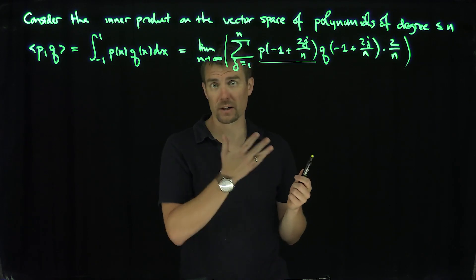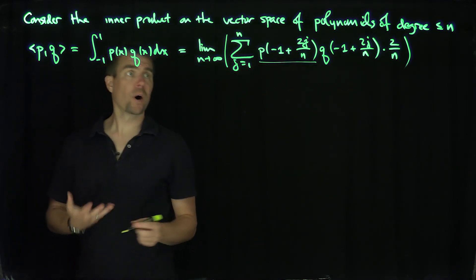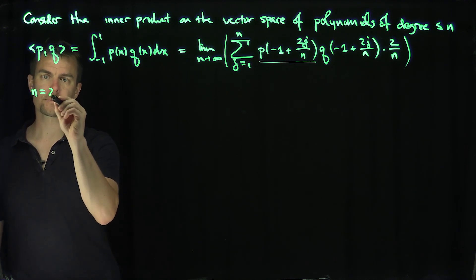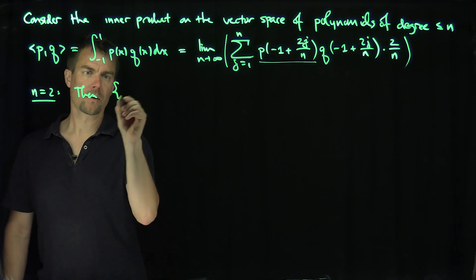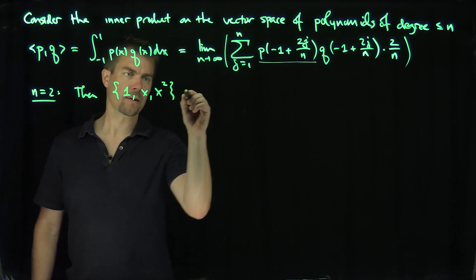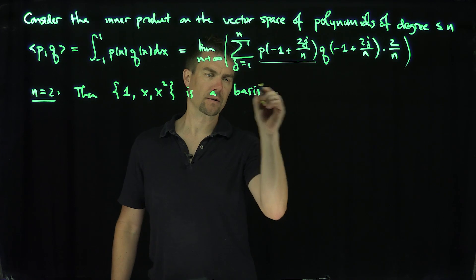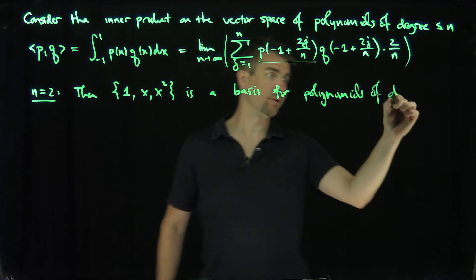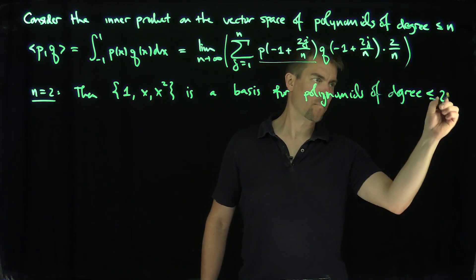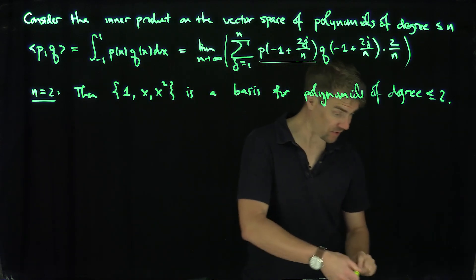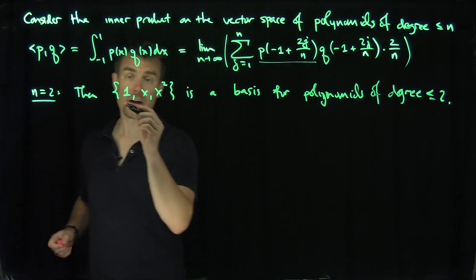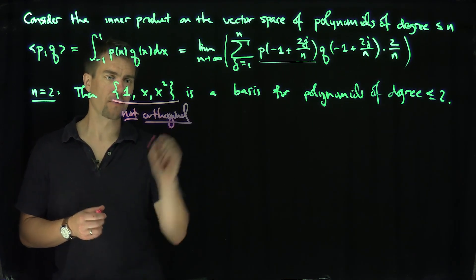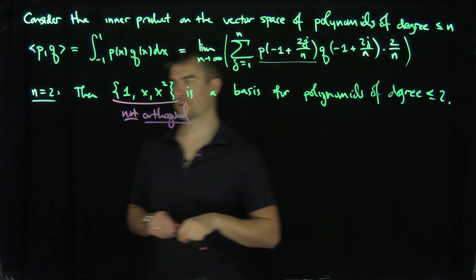This is exactly the form of a standard inner product. The term inside the limit is of the form a_j · b_j with non-negative weights 2/n — so this is a limit of standard ordinary inner products on ℝⁿ. Now, consider the special case where n equals 2. The set {1, x, x²} is a basis for polynomials of degree less than or equal to 2. That's just the standard basis, but the problem is it is not an orthogonal basis. We can make it orthogonal by applying the Gram-Schmidt algorithm.